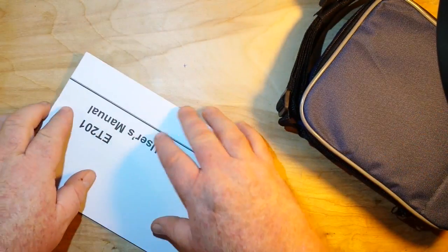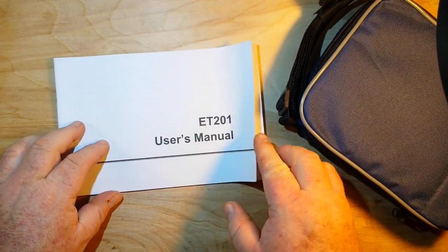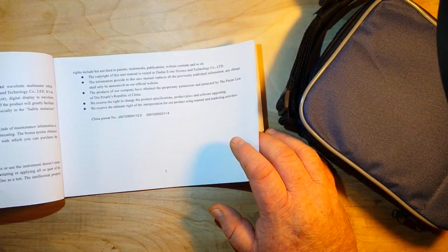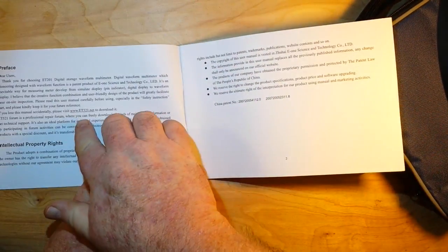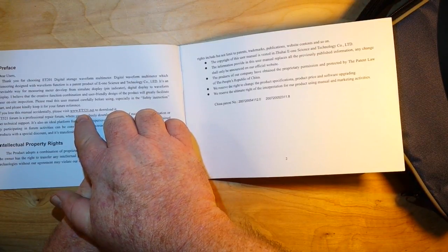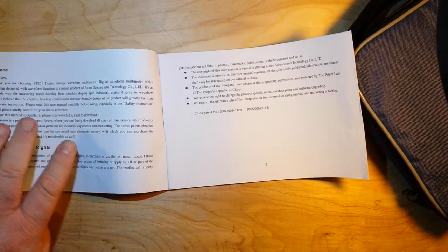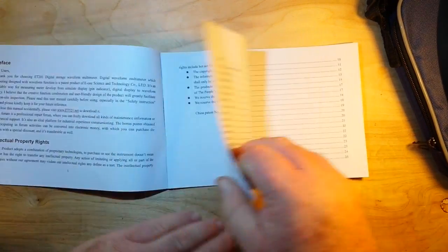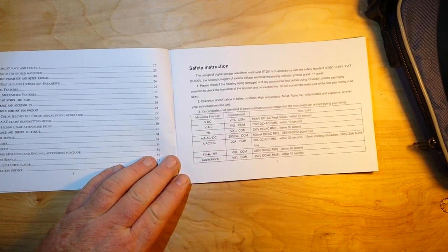So first things first, we've got the manual here. Written in typical Chinglish. But it does, however, say that if you lose it, you can go to www.et521.net to download a copy of this manual.